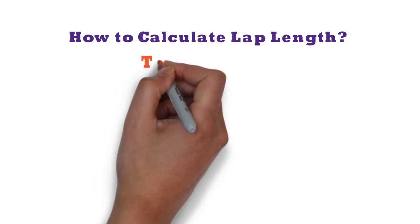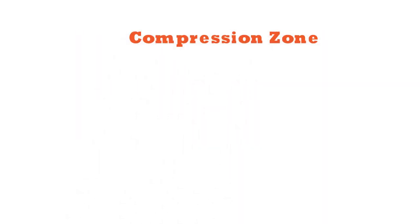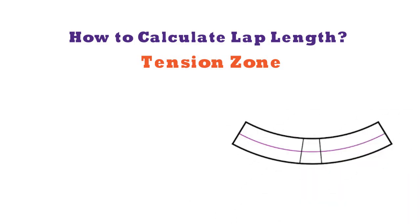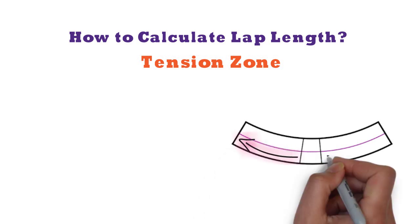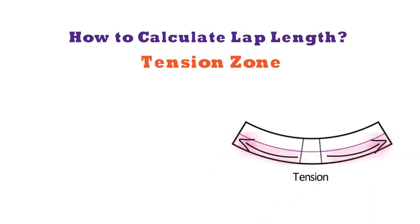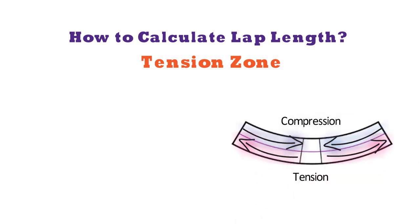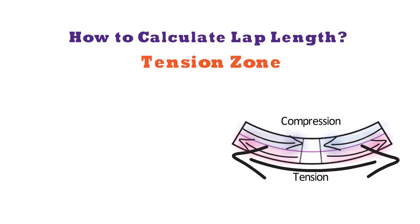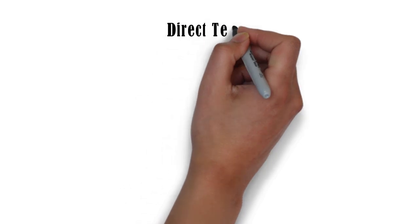Lap length calculations for tension zone and compression zone are different. Let us take the case of a beam. When a beam is subjected to forces in a building, the bottom portion of the beam experiences tension and the top portion experiences compression. In the tension zone, there are 2 cases: 1. Flexural tension and 2. Direct tension.